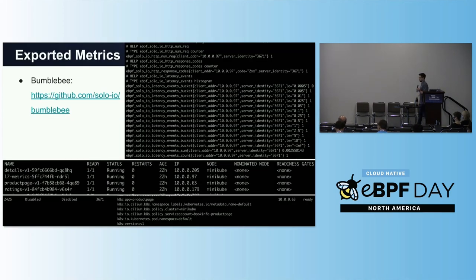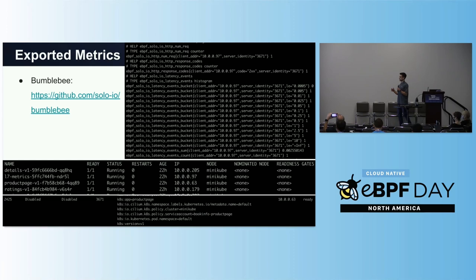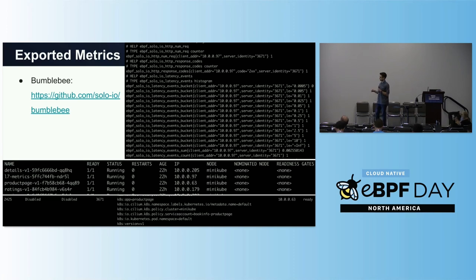Now for exported metrics: Bumblebee is a really cool tool for working with these kinds of programs and visualizing these metrics. It takes data existing in BPF maps and exports them so they're viewable in Prometheus. You can see the number of requests, response codes, and latency exported. Right now the keys are the client address — 10.0.0.97 — which correlates to the L7 metrics pod I was running a curl request from, and then the server identity that Cilium maintains. You can imagine translating these keys into whatever granularity you want, using Cilium's built-in state.